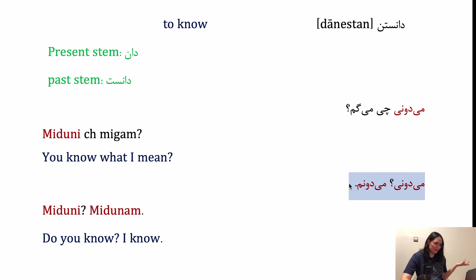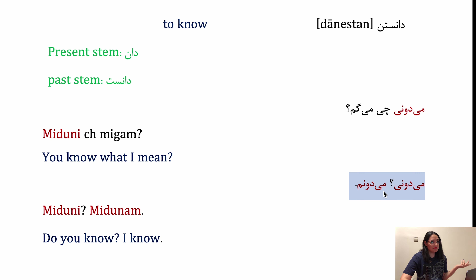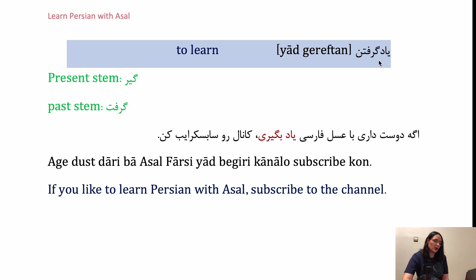A common question and answer using donestan: Miduni chi migam? — Do you know what I mean? The affirmative answer: Midanam — I know. The negative answer: Nemidanam — I don't know. The fourth verb is yad geriften.